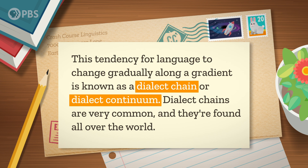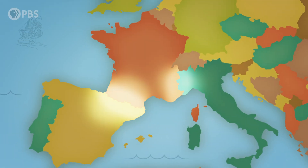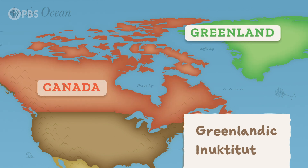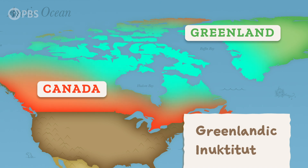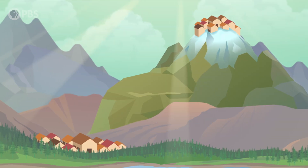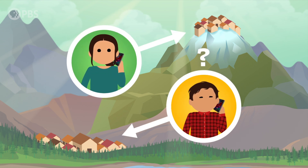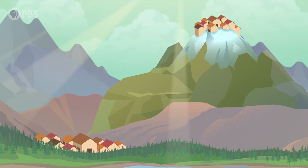Dialect chains are very common and found all over the world. French villages near Spain or Italy are home to varieties of French that are closer to the Spanish or Italian dialects just across the border than to the official versions spoken in Paris, Rome, or Madrid. While Greenlandic and Inuktitut in Greenland and northern Canada are sometimes considered two languages, they're actually part of a large dialect continuum spanning part of the Arctic Circle. In the Himalayan mountains, languages follow valleys — people at the top and bottom of one valley might both speak varieties of Tibetan but not immediately understand each other. Geographical features that prevent people from talking can disrupt a dialect chain, allowing different varieties to change and become less like each other over time.